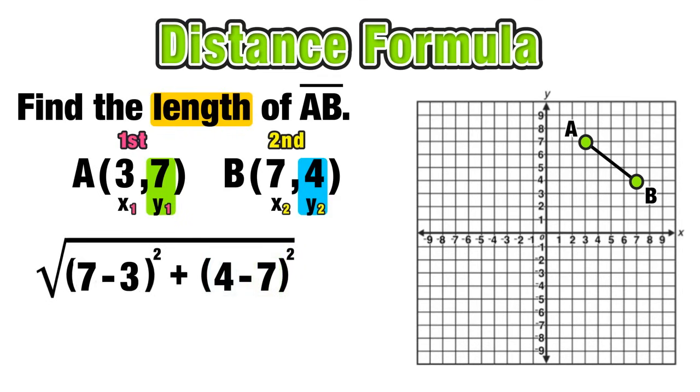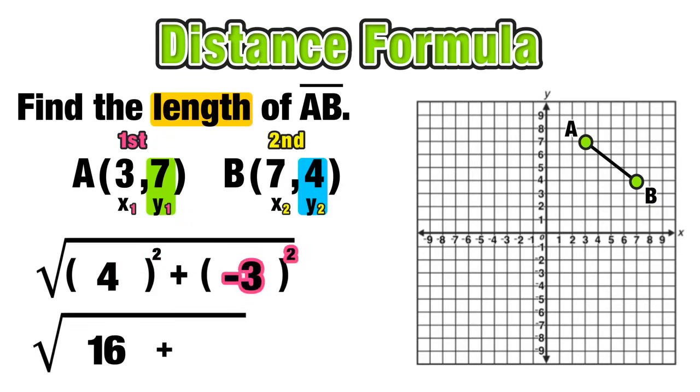And now that we're done substituting, we can begin to evaluate. 7 minus 3, we know is equal to 4. On the right side, 4 minus 7 is equal to negative 3. Now we can evaluate the exponents, 4 squared is equal to positive 16. And we're adding that to negative 3 squared, which is equal to positive 9.